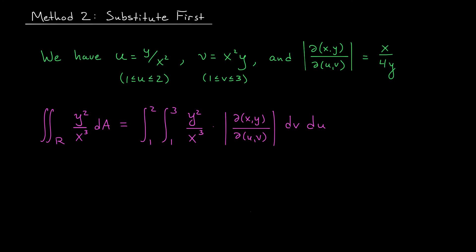In some examples like this one, however, that might not be so easy. Looking at the expressions x over 4y and y squared over x cubed, it's not at all obvious to me how to rewrite these in terms of u and v.